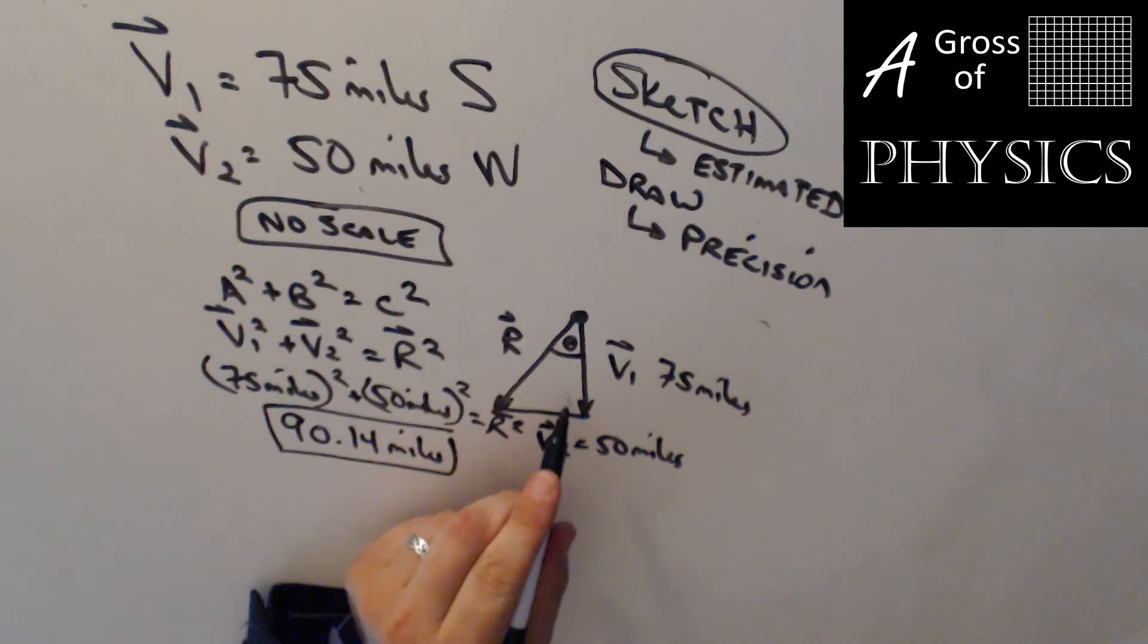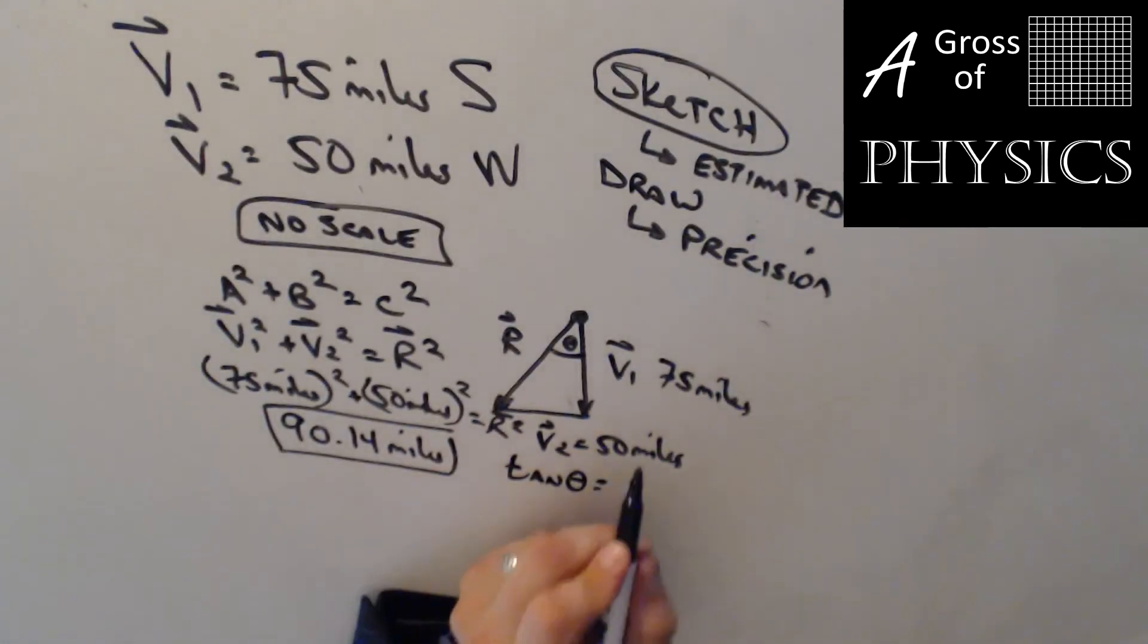To get the angle, I'm going to use tangent theta equals opposite, which is 50 miles, over adjacent, which is 75 miles. So 50 divided by 75. The units cancel. I have .667. Second tan, inverse tan, of the answer, second answer. And I have 33.7 degrees.